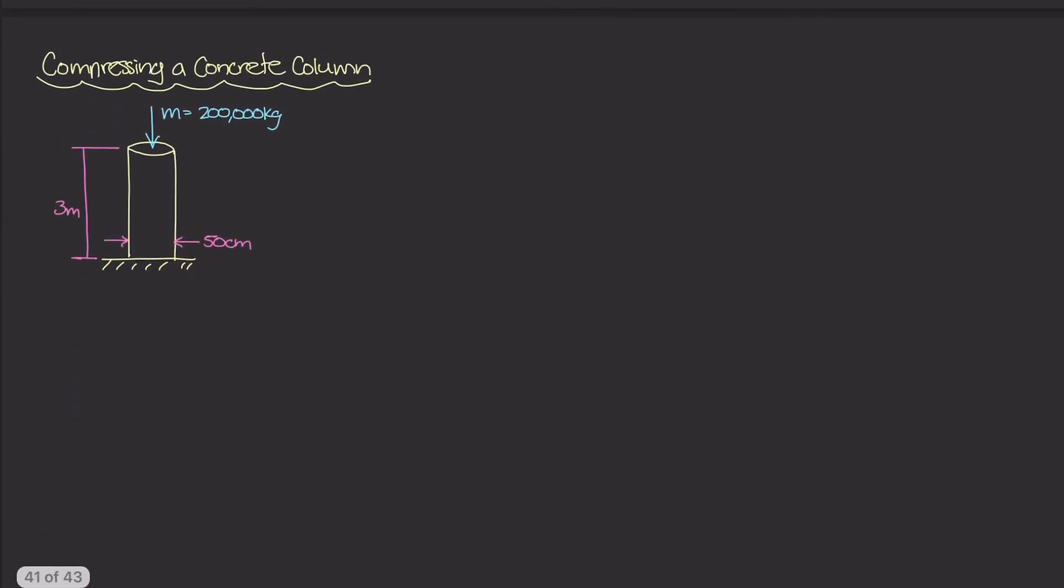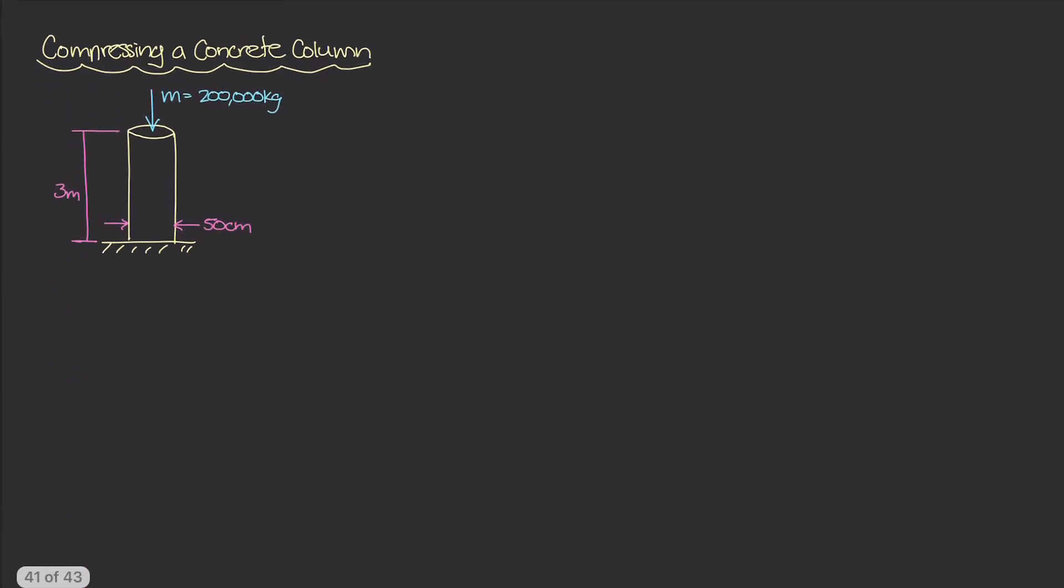Now in this example, I have a concrete column that has a diameter of 50 centimeters and a height of 3 meters, and it's supporting a mass of 200,000 kilograms being applied to the top of this column. And the question is asking how much is the column compressed? In other words, what is ΔL as this mass is being supported on top of this column?